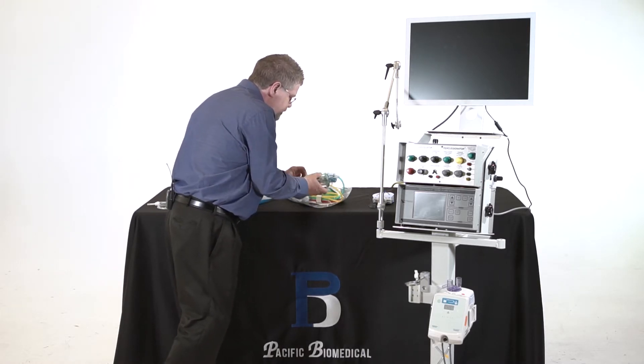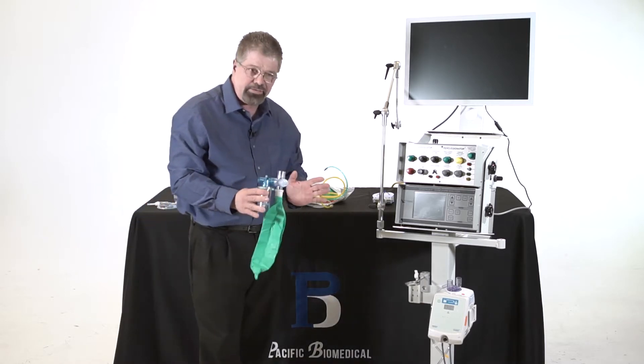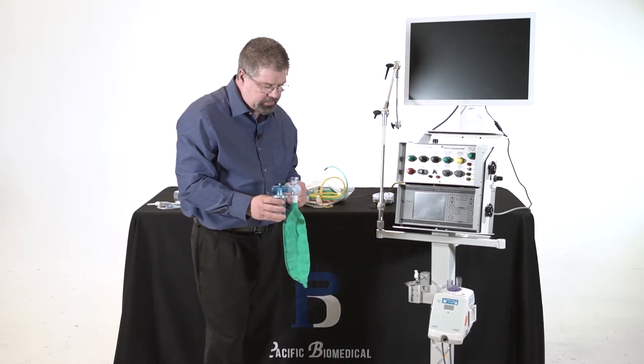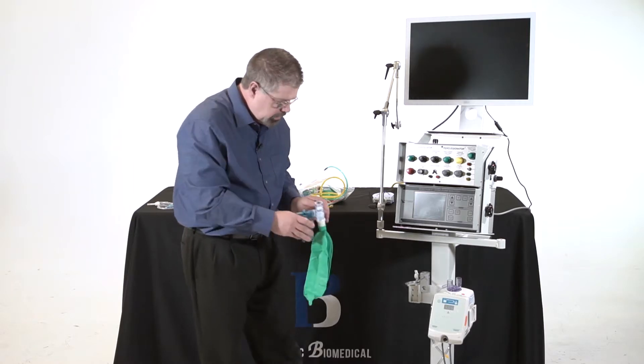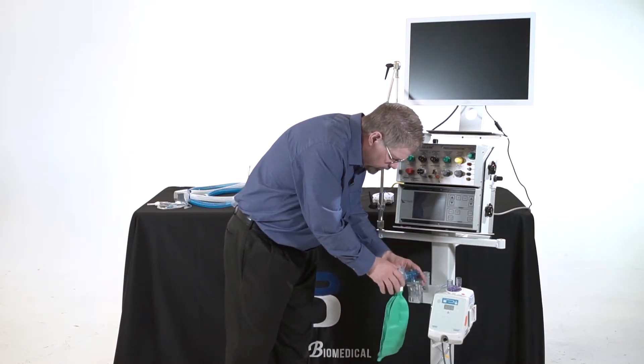So the first thing is the expiratory valve. Now this is a different style of expiratory valve than I've ever seen on a ventilator, but it simply goes right here on this arm.